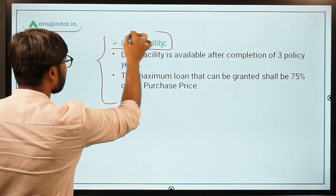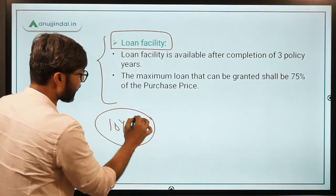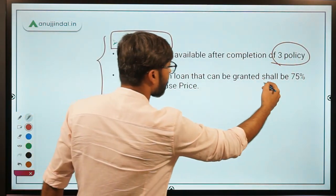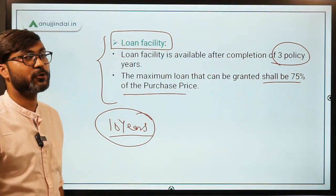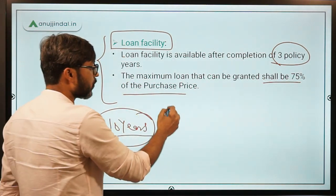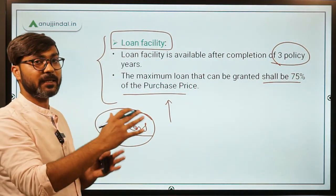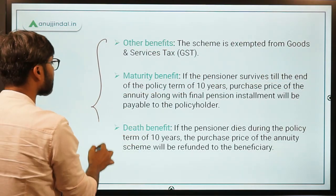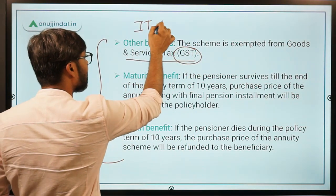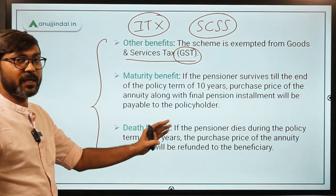There is also a loan facility in this scheme. The total tenure is 10 years. After the completion of three policy years, you can get a loan of 75 percent of the purchase price. The loan amount will be adjusted from your pension. There is also a GST exemption in this scheme, but remember there is no income tax benefit here. Income tax benefits are provided under the Senior Citizen Savings Scheme, which is a different scheme.